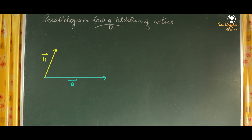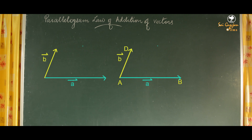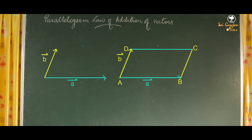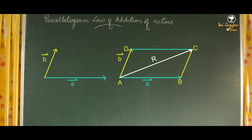To add these, let the side AB represent vector a and the side AD represent vector b. With the sides AB and AD we complete a parallelogram ABCD. In this parallelogram, the diagonal drawn from the angular point of the vectors — that is, from point A up to point C — represents the resultant vector.